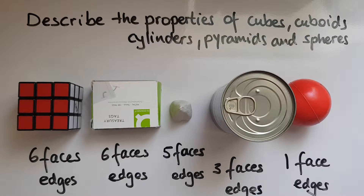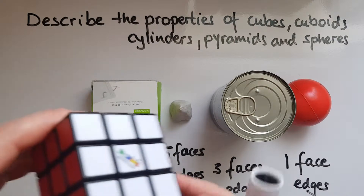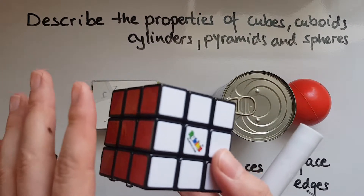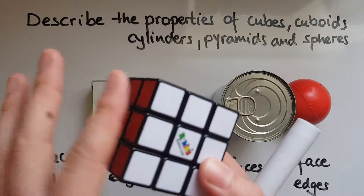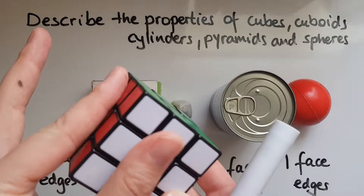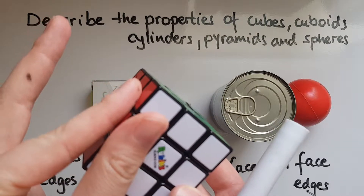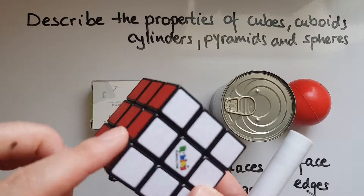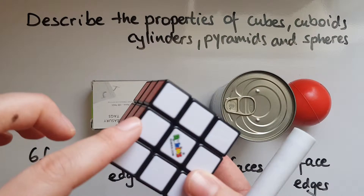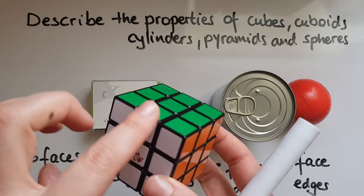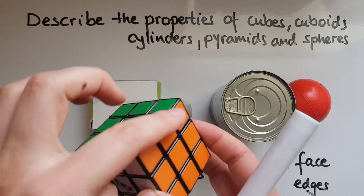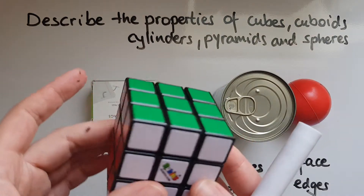Edges. What are edges? Edges are where two faces meet together. So this is the edge, this is the edge, and so on.